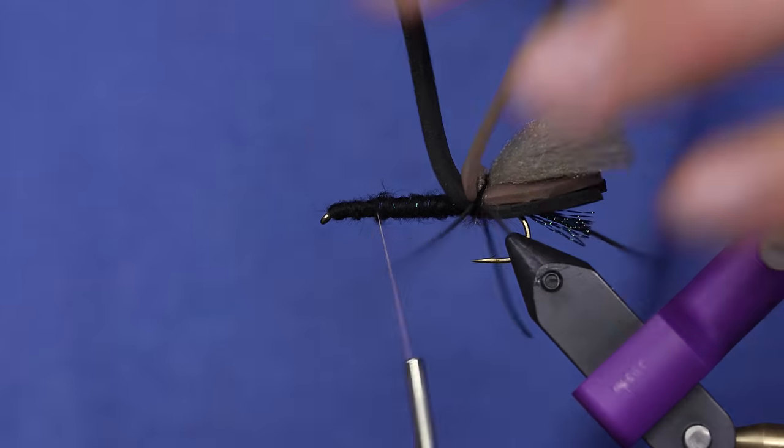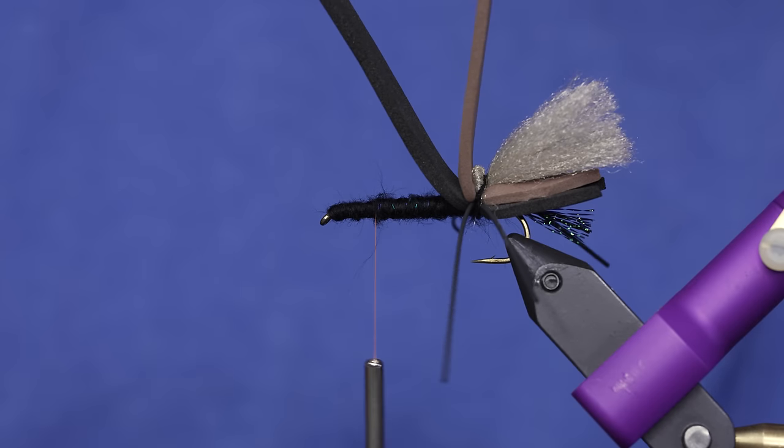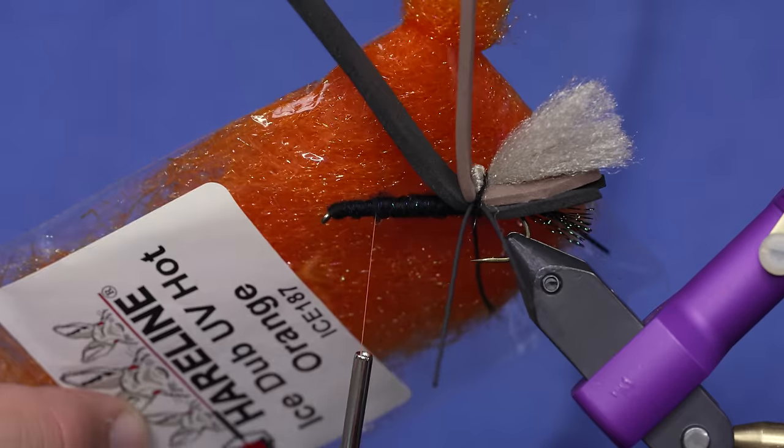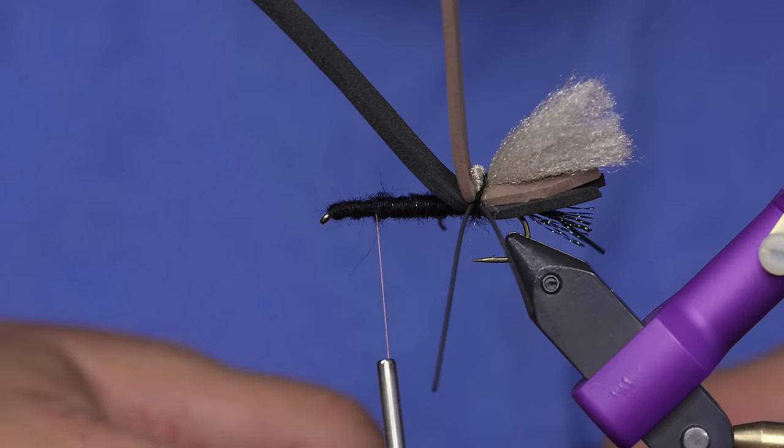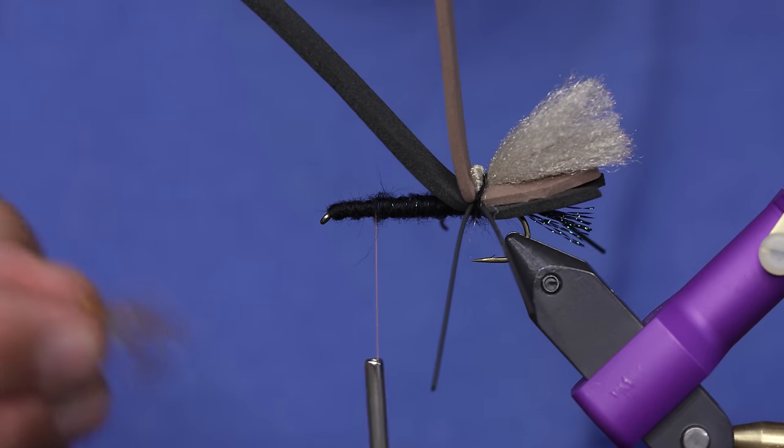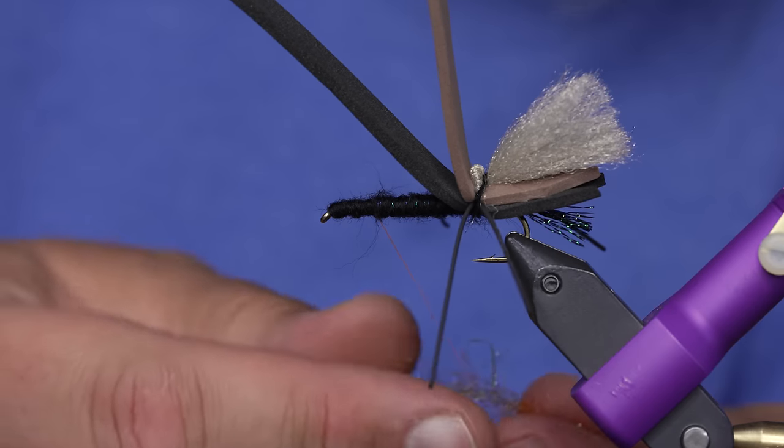So once I'm about to here, this is where my orange will come into play. I've just chosen orange ice dub. You can use whatever orange dub you like. I like this because it pretty much stays the same color once it gets wet.